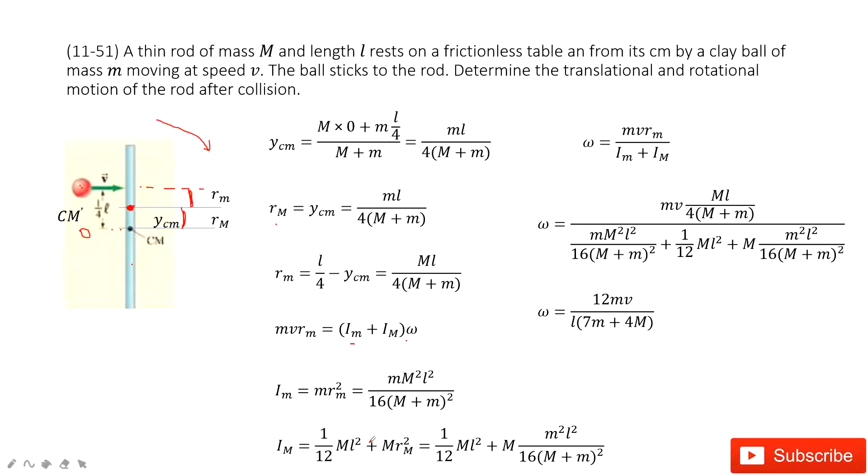And then for the stick, the moment of inertia around this rotation axis is 1 over 12 ML squared plus the capital M times r_M squared.